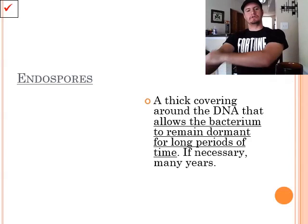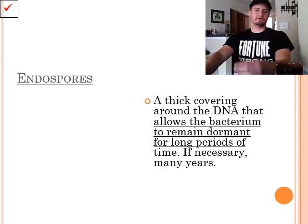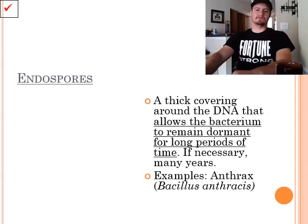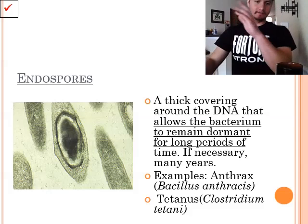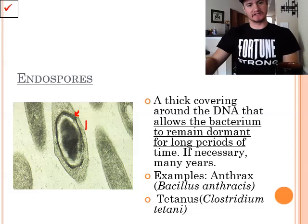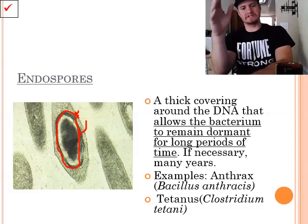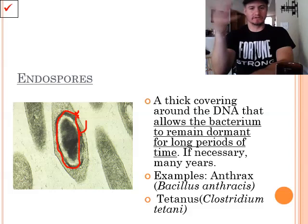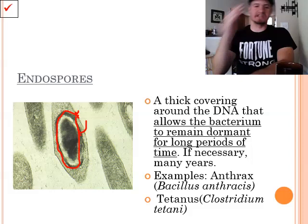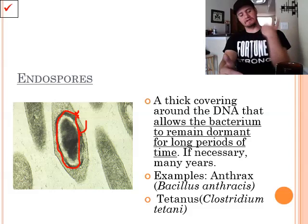So, endospores. Endospores are a thick covering around the DNA that allows the bacteria to remain dormant for long periods of time if necessary, for many years. Some examples include anthrax, or Bacillus anthracis, and tetanus. So, if you look at this bacteria here, see how we have this covering on the outside? The bacteria is inside here. And then we have this covering that goes around it. Now, what that does, basically, is it allows it to go into a state of suspended animation where it doesn't have to worry about surviving, eating, reproducing, anything like that.